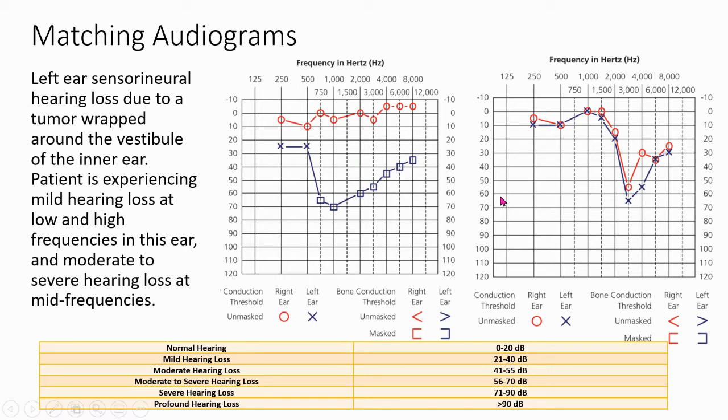Okay, so here's the two that I could potentially choose from, and we need to determine which of these two audiograms actually best fits this patient. So first of all, I'm noticing that it says the left ear has sensory neural hearing loss.